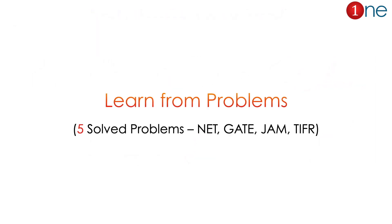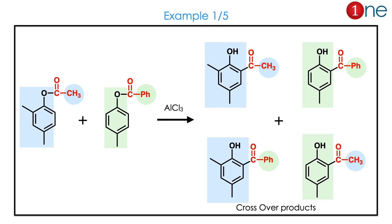Problems help you understand the concept much better. Here are five solved problems from competitive examinations. In the first problem, you have two phenolic esters and you are using aluminium chloride. Fries rearrangement can happen. Since you are using similar starting materials, a crossover reaction is also possible, giving crossover products. Both can combine, giving four variable products. This is proof for both intermolecular as well as intramolecular reaction.